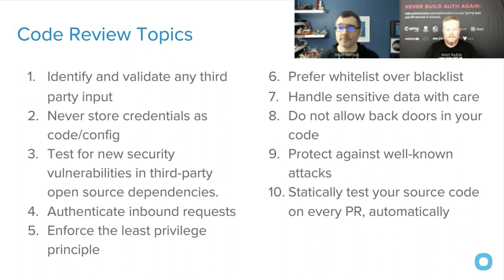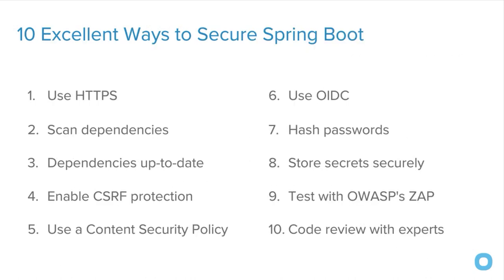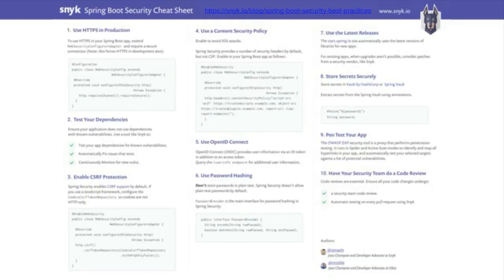To recap the 10 excellent ways to secure your Spring Boot app: use HTTPS in production, scan your dependencies, keep them up to date — GitHub now uses Dependabot by default for public repos. Enable CSRF protection, use a Content Security Policy, use OpenID Connect for authentication, hash your passwords, store your secrets securely, test with OWASP ZAP, and do code reviews with experts. Simon created a Spring Boot security cheat sheet you can print out — just Google 'Spring Boot security cheat sheet' to find it.